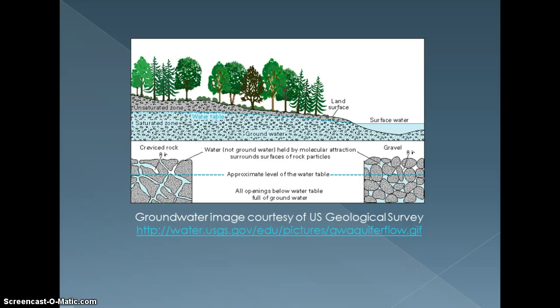Groundwater is contained in aquifers below the Earth's crust. It makes up about 0.61% of all water on planet Earth. Groundwater from confined aquifers generally gives us the highest quality of drinking water with the lowest need for treatment.